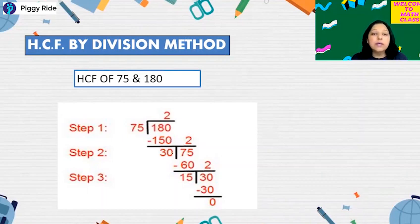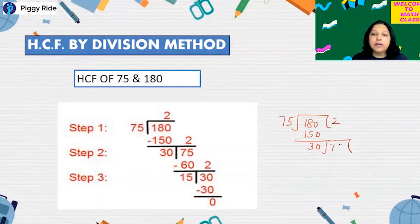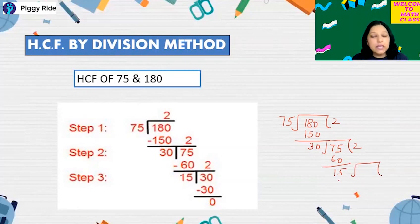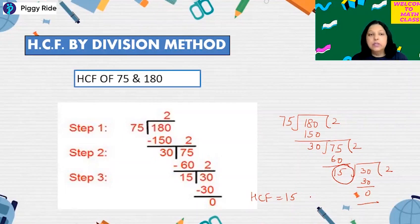In this case, we divided 180 by 75. 75 times 2 is 150, so the remainder is 30. Now take 30 as the divisor and 75 as the dividend. 30 times 2 is 60, and the remainder is 15. Next, the divisor is 15 and the dividend is 30. 15 times 2 is 30, so the remainder is 0. Therefore the HCF is 15 — the last divisor which gave remainder 0.